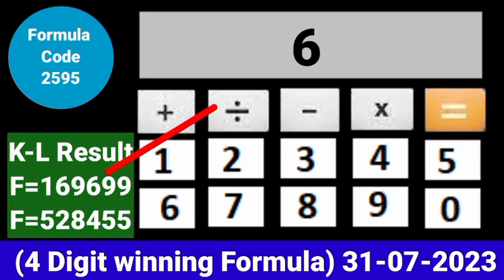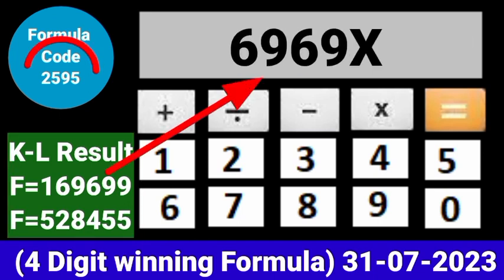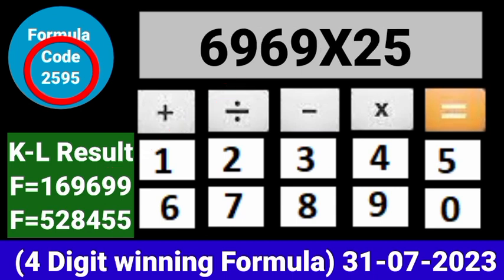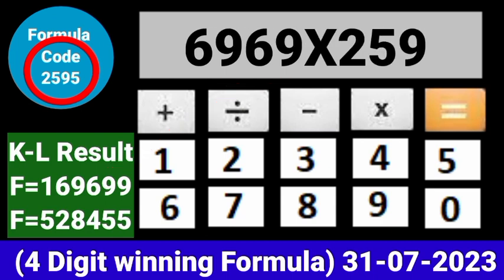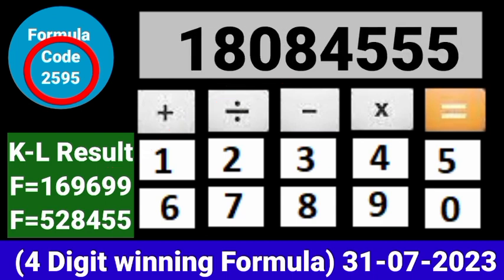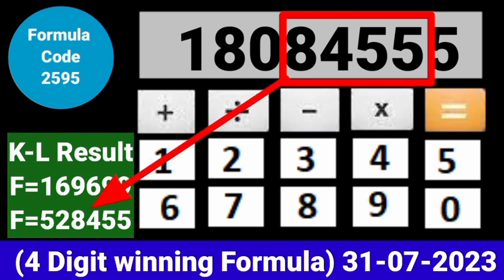Put this number on the calculator and multiply by this formula code and press equal. After equal, you can check this single 4-digit number that passes into the next draw of Kerala Lottery 3PM. This formula can be checked on a mobile calculator or any type of calculator.